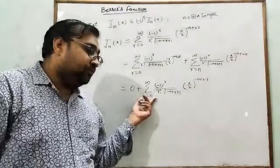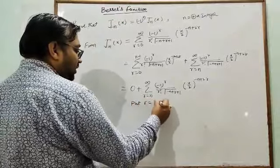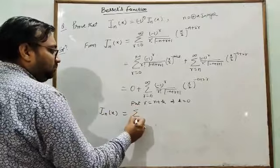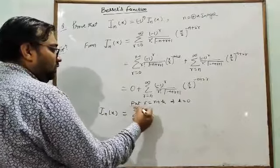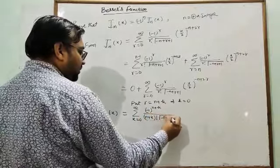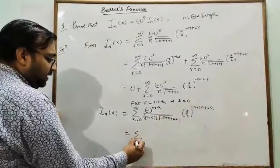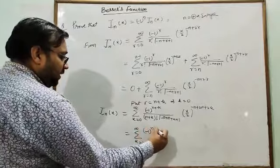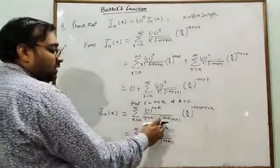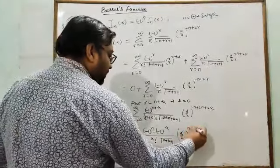The lower limit is r = n, so we substitute r = n + k, which means when r = n, k = 0. Then J_{-n}(x) = Σ (k=0 to ∞) [(−1)^{n+k} / ((n+k)! · Γ(k+1))] · (x/2)^{n+2k}. Here, (n+k)! = Γ(n+k+1) and Γ(k+1) = k!, so we rewrite: Σ (k=0 to ∞) [(−1)^{n+k} / (k! · Γ(n+k+1))] · (x/2)^{n+2k}.